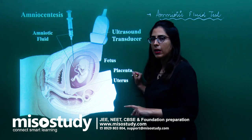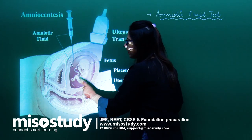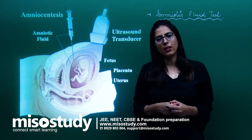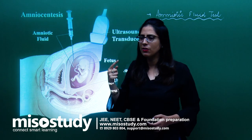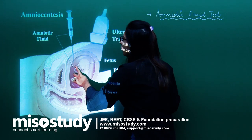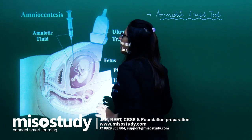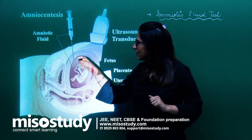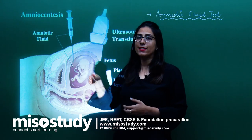One thing we should keep in mind while taking out the amniotic fluid is that it should not affect the placenta. If it affects the placenta, there are chances that a miscarriage can happen. A long needle syringe is inserted into the stomach area, which crosses the uterus, and after that, this particular fluid — the amniotic fluid — is taken out. This amniotic fluid, which is present around the baby, will have some cells of the baby. That is the reason amniotic fluid is taken.